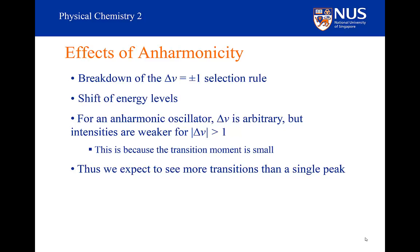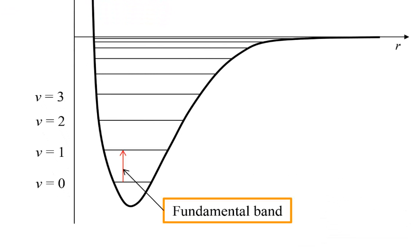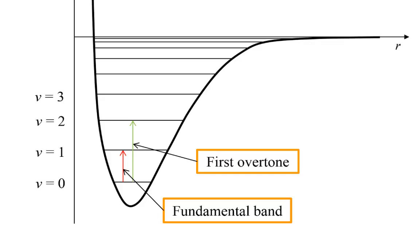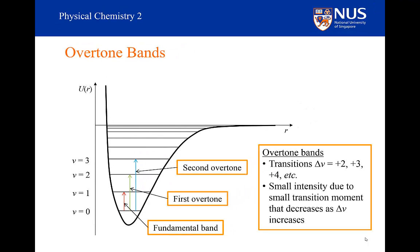So we will get more transitions than a single peak. We are going to get a transition from V equals 0 to V equals 2, at a frequency of approximately twice the fundamental frequency. The transitions where delta V is greater than 1 are known as overtone bands. If we go from V equals 0 to V equals 1, we get what we call our fundamental band. If we go from V equals 0 to V equals 2, we have our first overtone, and they get steadily weaker and weaker in intensity. So you can see why the first overtone will appear in our spectrum at approximately twice the frequency of the fundamental band — but not exactly twice, because the levels are getting closer and closer together; it will be slightly less than twice the frequency of the fundamental.